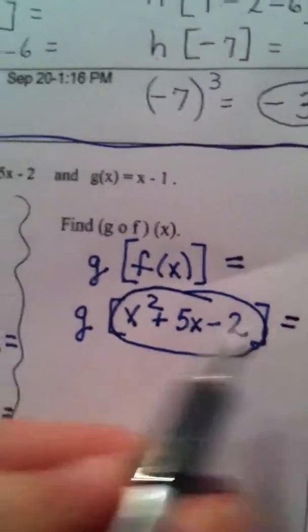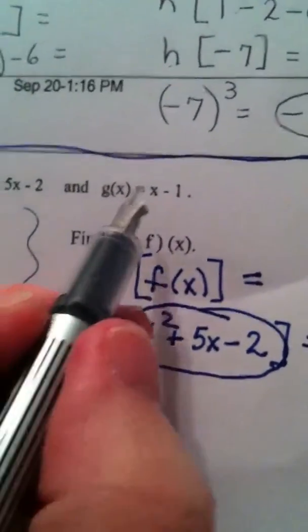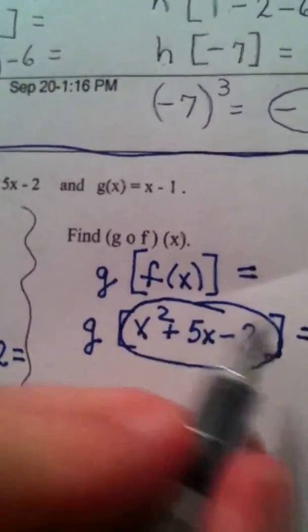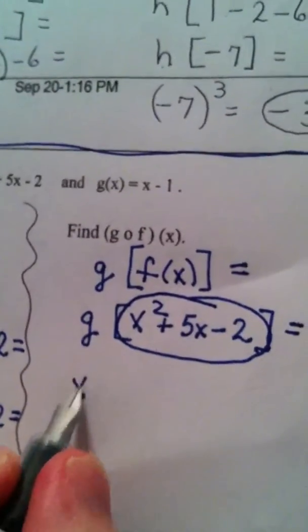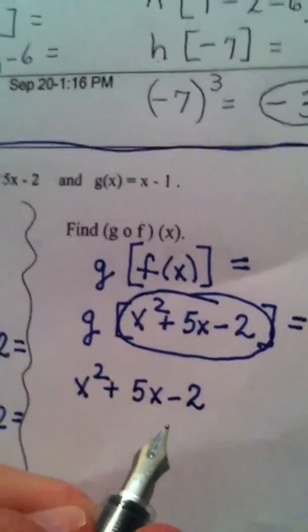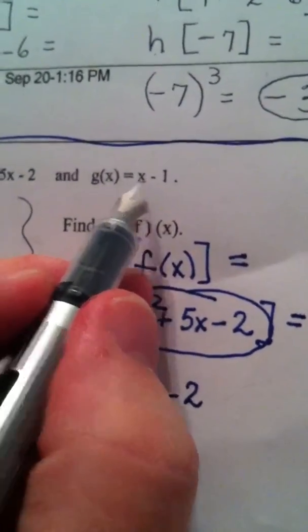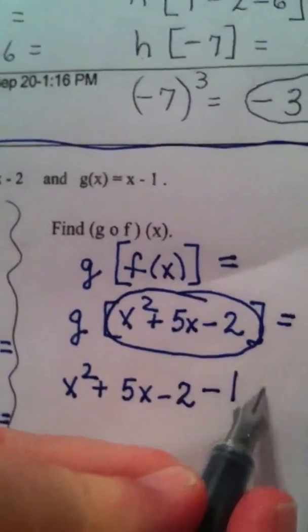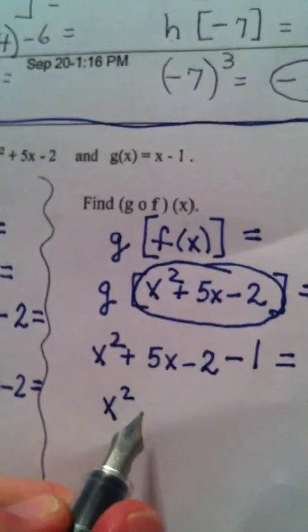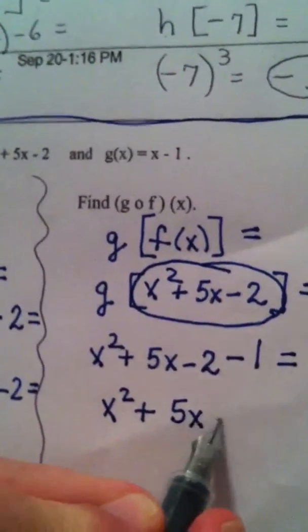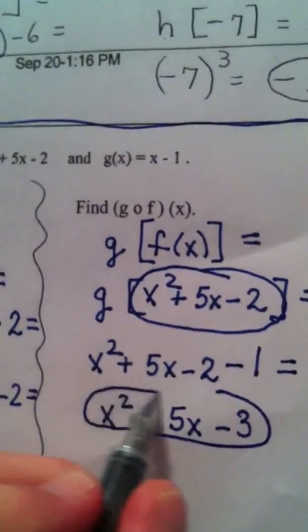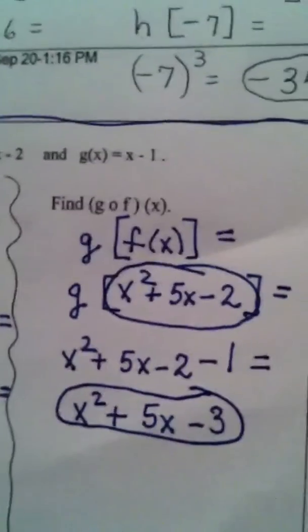Okay? Well, look what function g does. It takes the input minus 1. So, it takes this whole input, which is x squared plus 5x minus 2. That's like my package that I'm delivering. That's what x is. And then it does minus 1. And when I collect like terms, I get x squared plus 5x minus 3. And that's the answer.